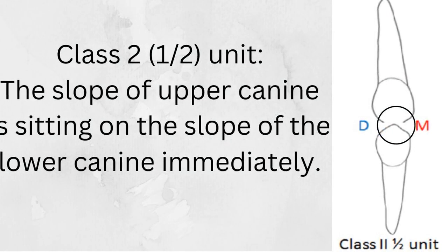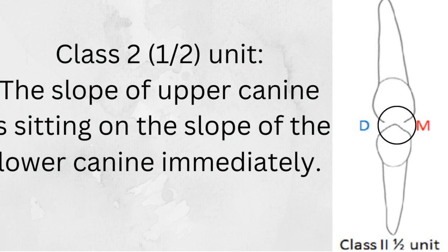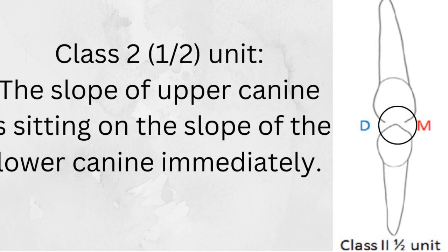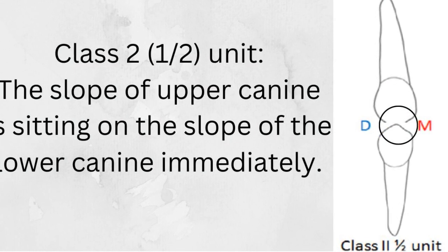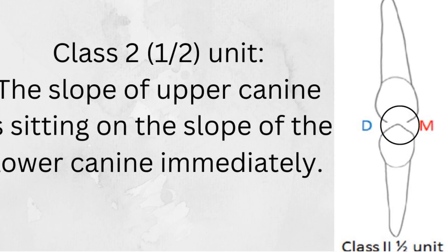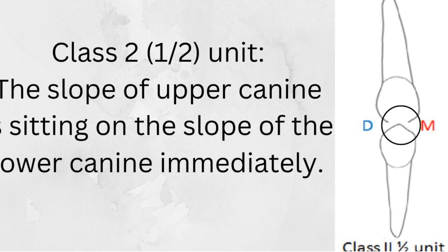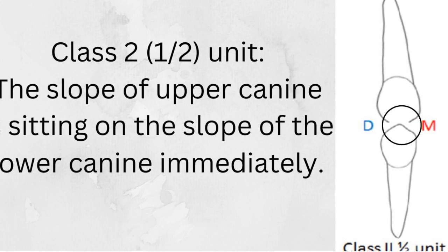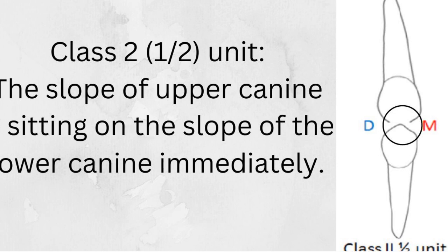In Class 2 canine relation, we have half unit and full unit. In half unit, the slope of the upper canine is sitting on the slope of the lower canine immediately. And it's called half unit because still the lower canine is not moving more backward.